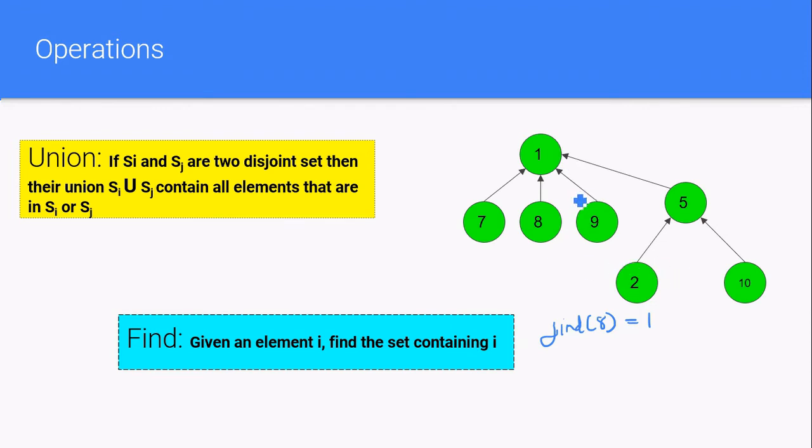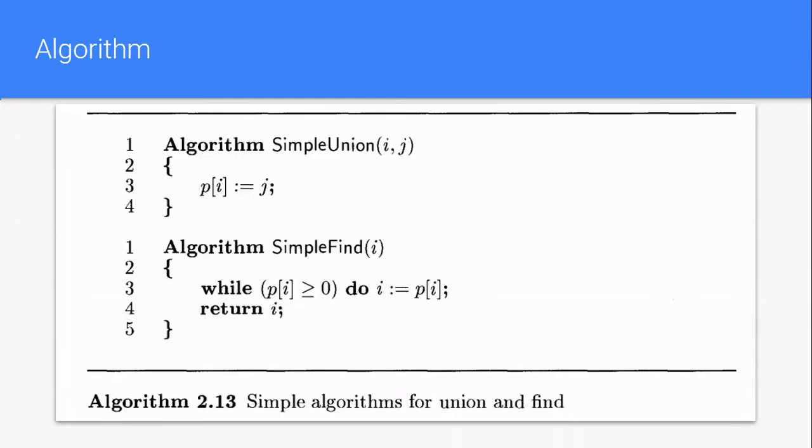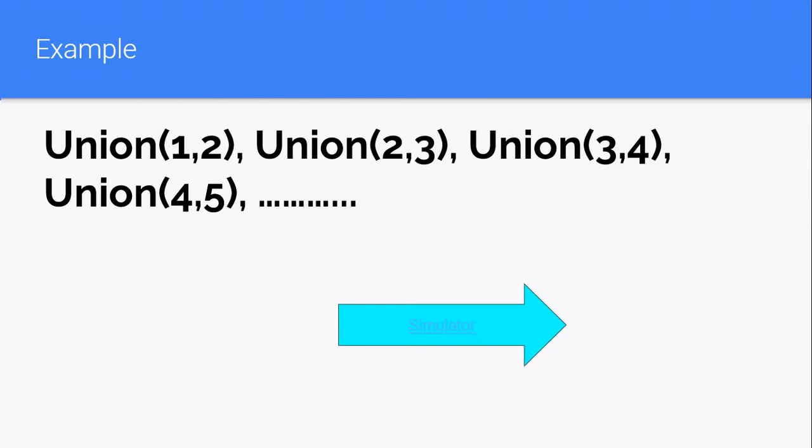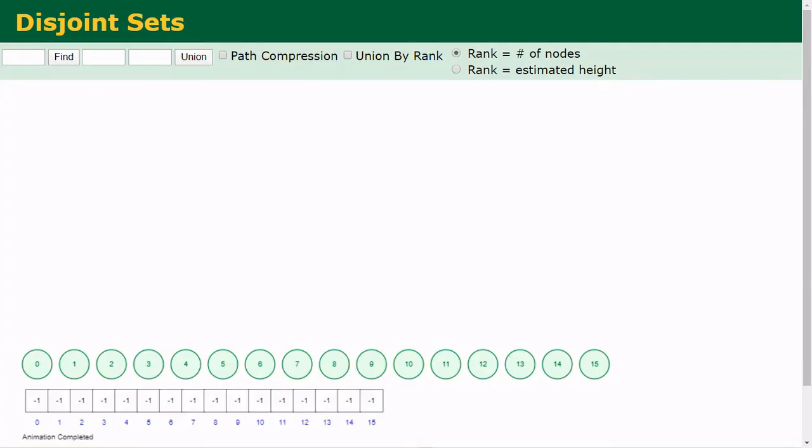So the find operation is taking place in a propagation like find of 2 will call find of 5 and find of 5 will call find of 1, like that it will go. So these are the algorithms for the simple union and simple find operation in disjoint set. And let us see this in example.